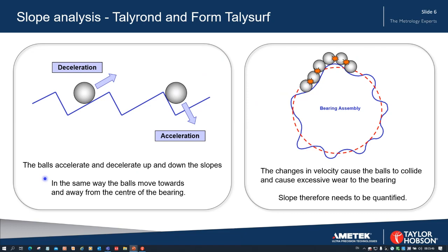That's the same thing that happens on a typical bearing race — the balls will move towards and away from the centre of the bearing. Where we have many more undulations, the many ball bearings in the bearing race will change in velocity and the balls will collide. As they collide they will cause excessive wear to the bearing, so we clearly need to quantify the value of slope.